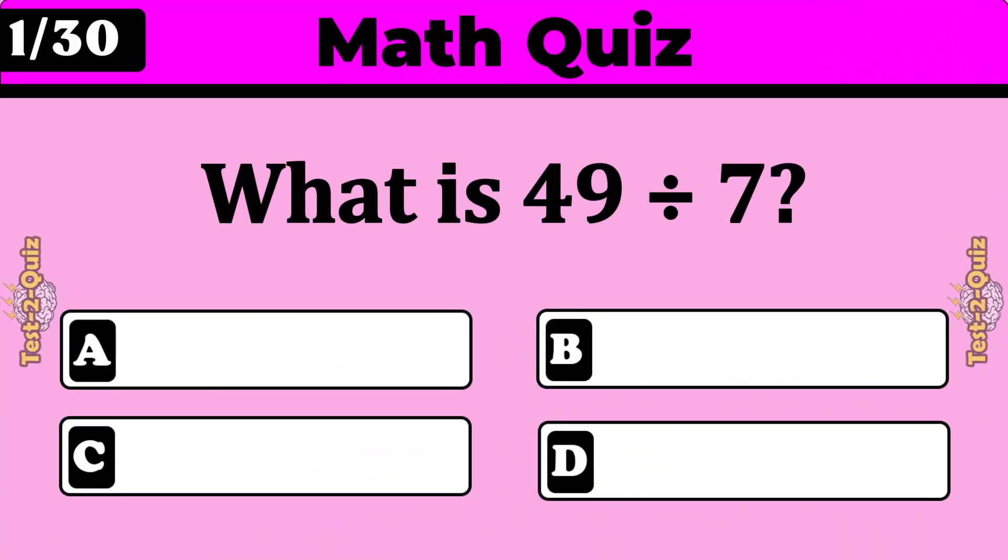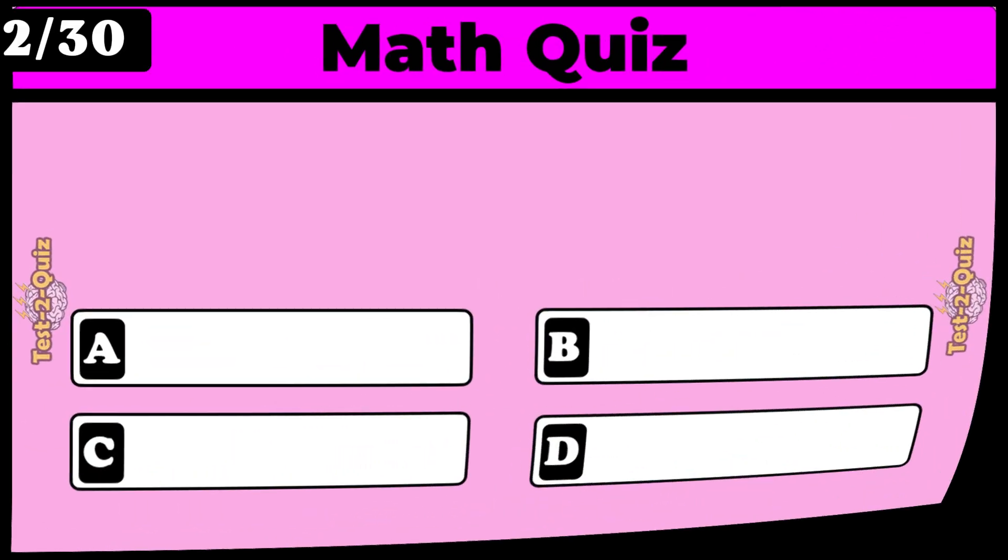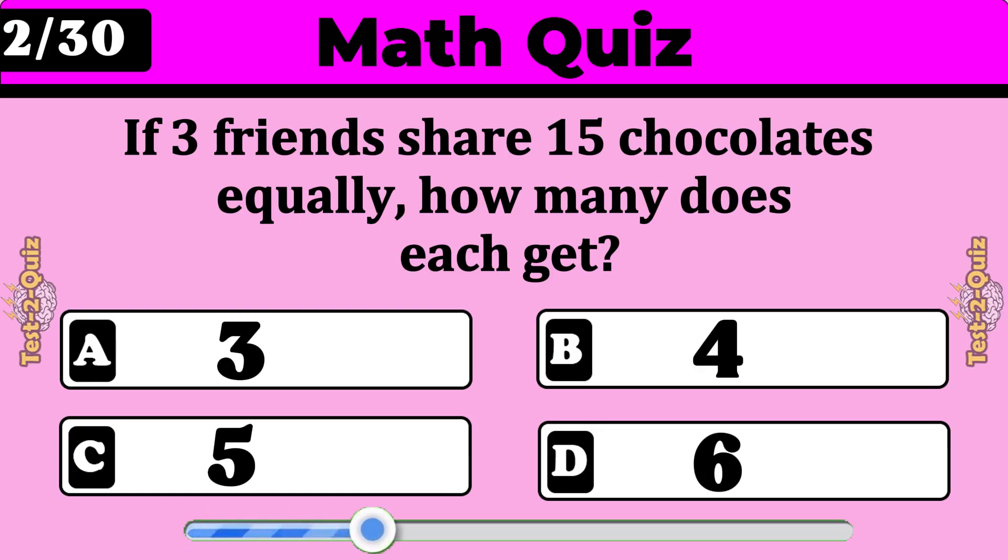What is 49 divided by 7? The answer is 7. If 3 friends share 15 chocolates equally, how many does each get? 5.